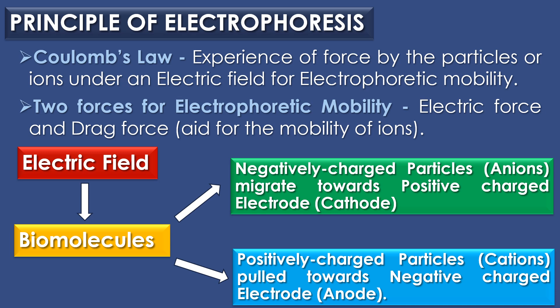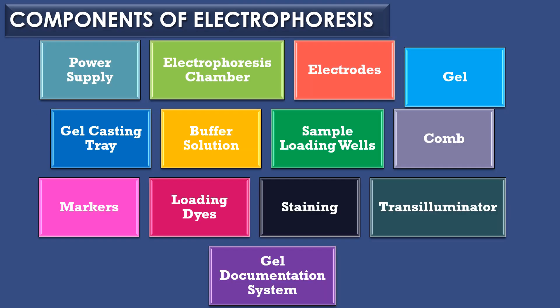When subjected to an electric field, ionized biomolecules will migrate at different rates depending on the mass and the net charge of each particle in the solution. Negatively charged particles or anions will migrate towards a positively charged electrode, and positively charged particles or cations will be pulled towards a negatively charged electrode. The differences in speed and direction of each charged particle result in a migration pattern unique to its individual properties, leading to the isolation of components of the biomolecules that possess similar characteristics.